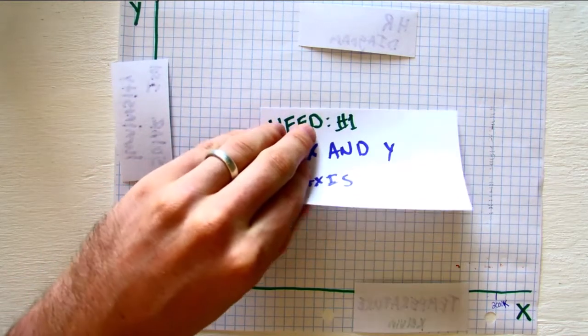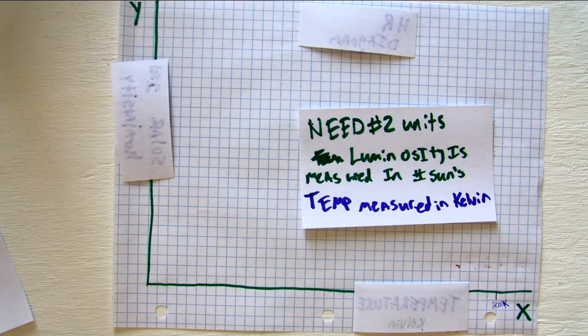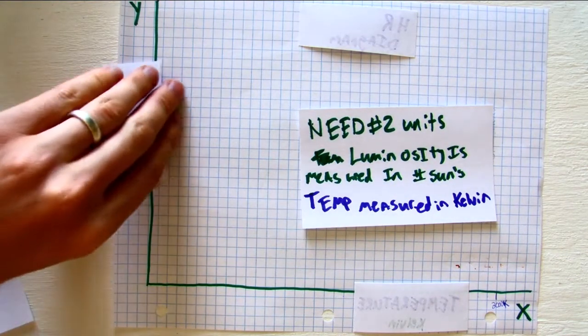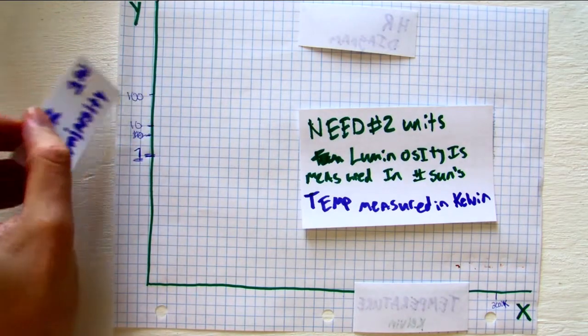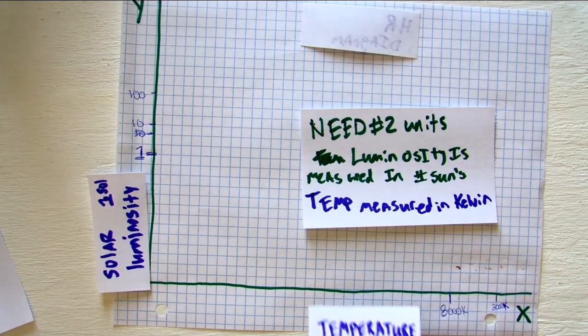Next, you're going to need some units on your graph. So for an HR diagram, the units are luminosity in solar luminosity and temperature in Kelvin.